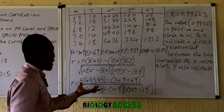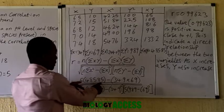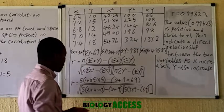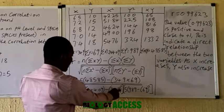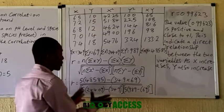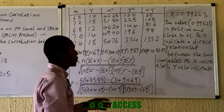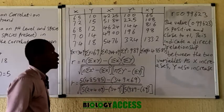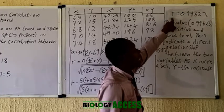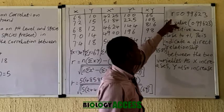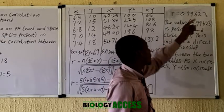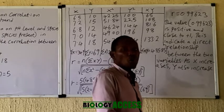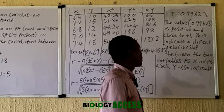Carry out the calculations step by step: multiply each pair of terms separately, then subtract. Follow each step carefully to avoid mistakes. After completing all the arithmetic, the correlation coefficient r equals 0.99623. This value is positive and very close to 1, indicating a strong direct relationship between the two variables.